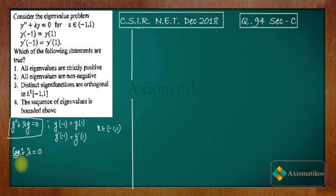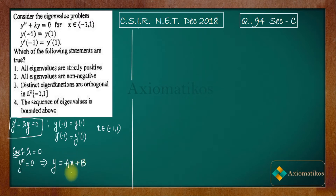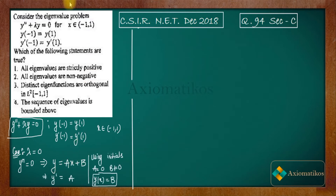If λ = 0, then y'' = 0. Integrating twice gives y = ax + b. The derivative is y' = a. Applying the boundary conditions, we get a = 0 and b is non-zero.